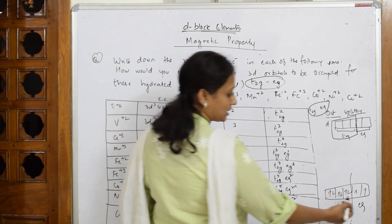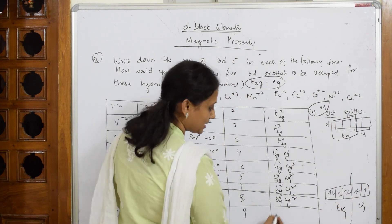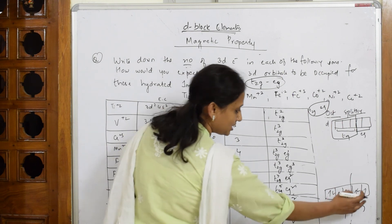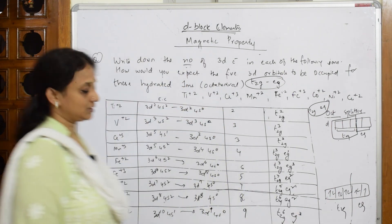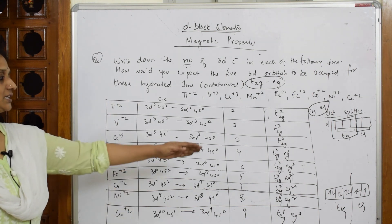Now, 8 are over. Isn't it? The ninth one you are going to fill here. So what do I get? T2G has 6 and EG has how many? 3. So this is how you are going to write for all. Important thing is configuration. Taking out and filling.